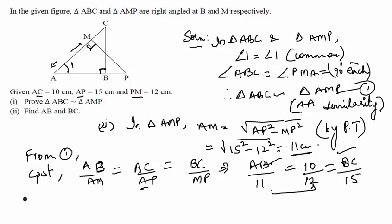So equating these two first, we get AB is equal to 11 into 10 by 15. So solving this, we get AB is equal to 7.33 cm.